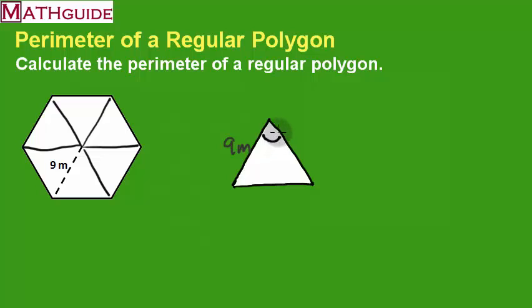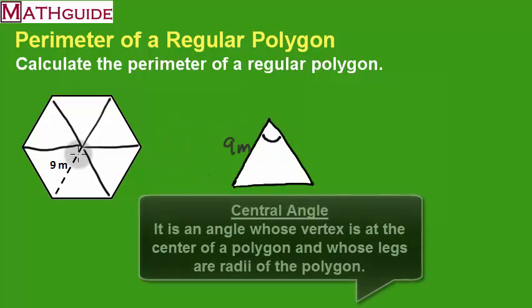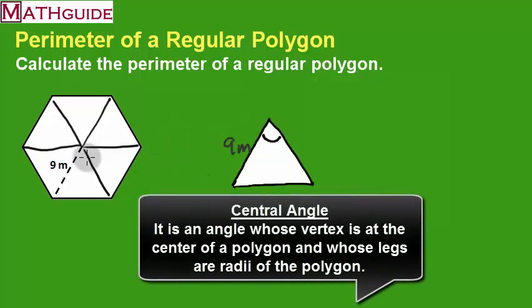Once we get this angle at the top, we'll know more about this triangle, what type of triangle it is. And it'll help us find the length of one side, or this bottom distance. To find this angle, which is called a central angle,